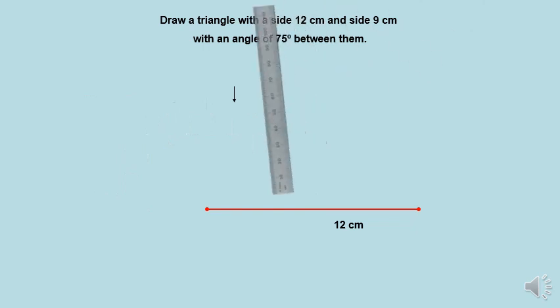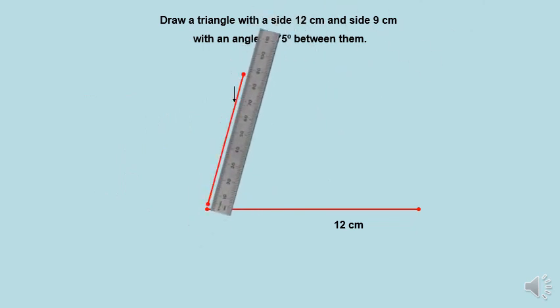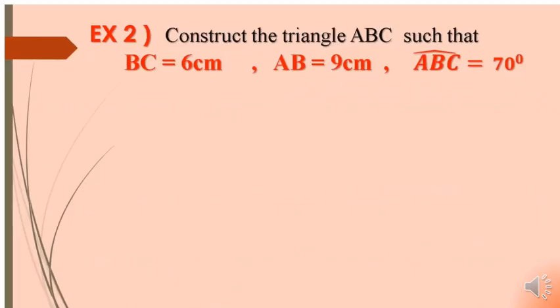Then, we draw the third side which is 9 cm and join the two endpoints to get the triangle. Let's take this last example.